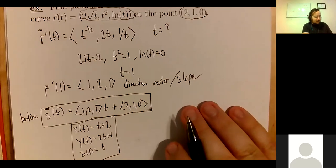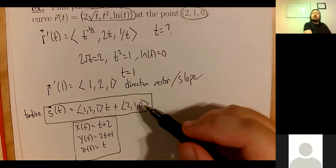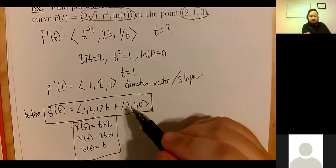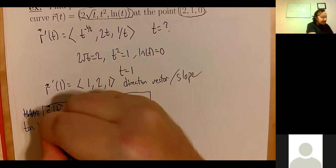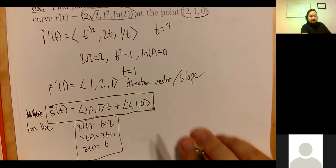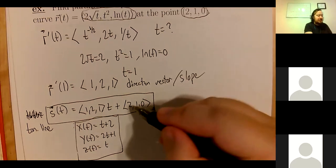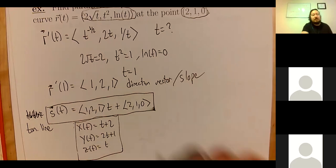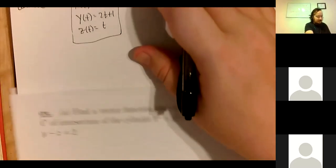The direction vector comes from the derivative — just like in Calc 1, the derivative represents the slope of the tangent line, and the same applies for vector-valued functions. The point (2, 1, 0) is expressed as a vector because this is a vector equation; we want the vector pointing to that point from the origin.